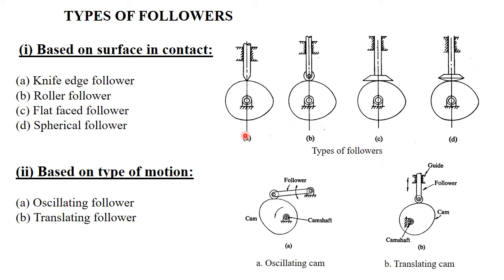Another classification of followers is based on the type of motion. As seen previously, followers have two types of motion: oscillatory motion and translatory motion. So there are two types of followers based on motion — oscillatory and translatory.